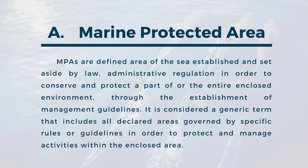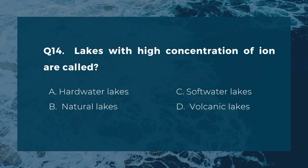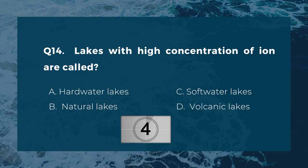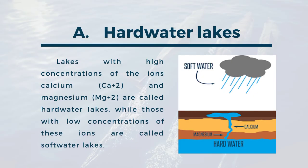Question fourteen: lakes with high concentration of ions are called. A) hard water lakes, B) natural lakes, C) soft water lakes, D) volcanic lakes. The answer is A, hard water lakes. Lakes with high concentrations of the ions calcium and magnesium are called hard water lakes, while those with low concentrations of these ions are called soft water lakes.